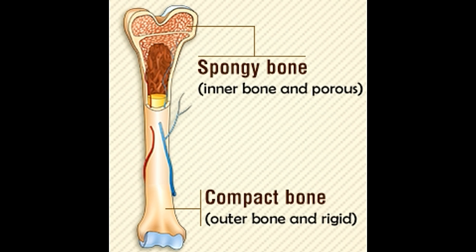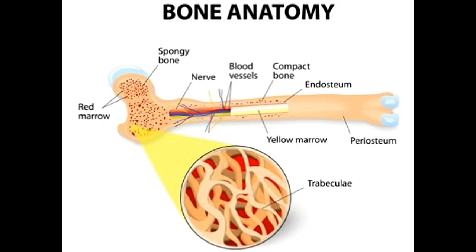On the other hand, the spongy bone that is less dense appears very similar to that of a kitchen sponge. Depending upon the structure of the bone, the human skeletal system consists of two types of bones: spongy and compact.